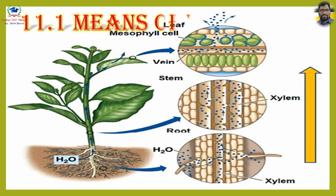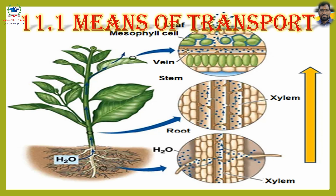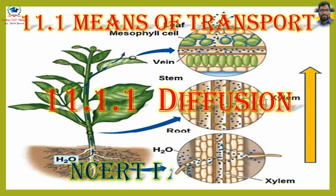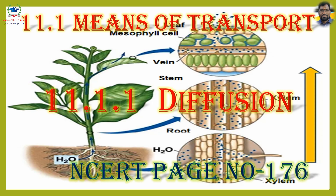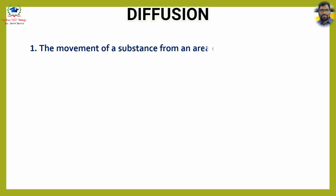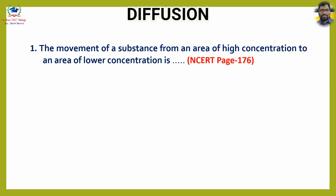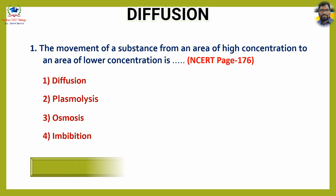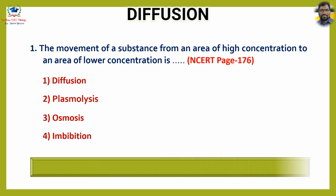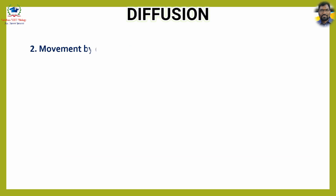11.1 Means of Transport, 11.1.1 Diffusion. NCERT page number 176, question number one: The movement of a substance from an area of high concentration to an area of lower concentration is — options: one diffusion, two plasmolysis, three osmosis, four imbibition. The answer is option one, diffusion.